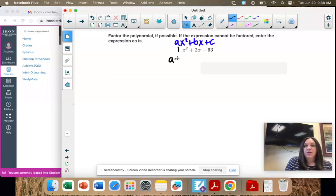So a is by x squared, it's that invisible one. B is by x, it's positive 2. And c is the constant, it's negative 63.